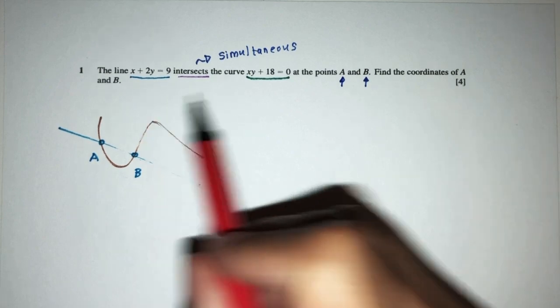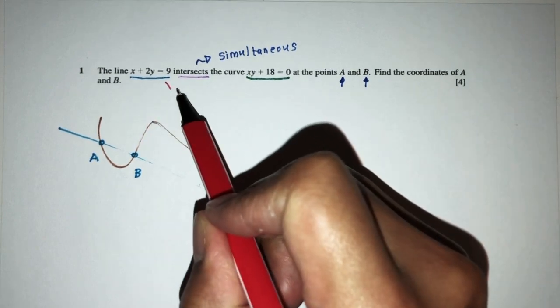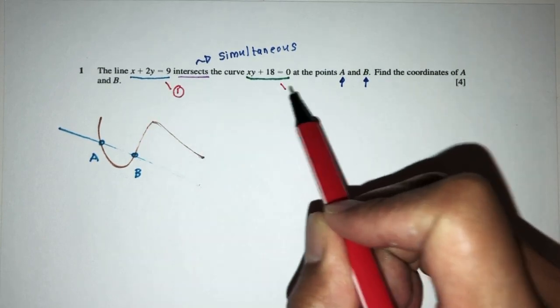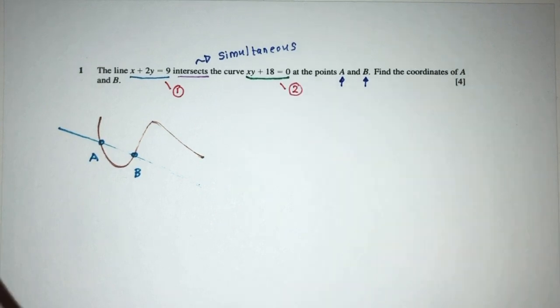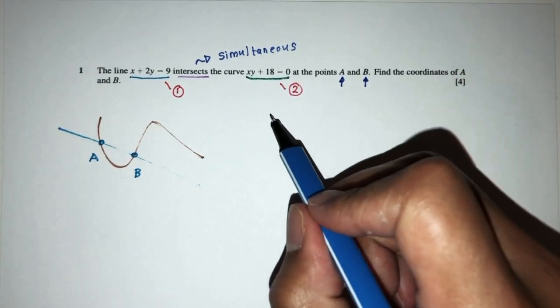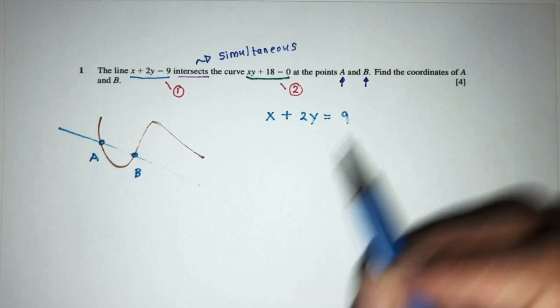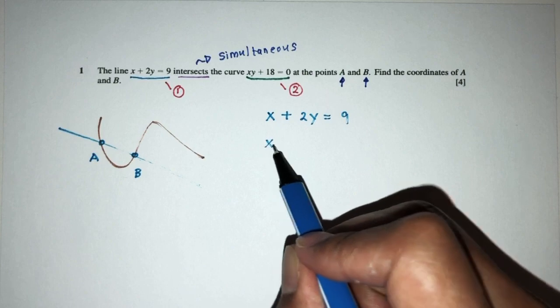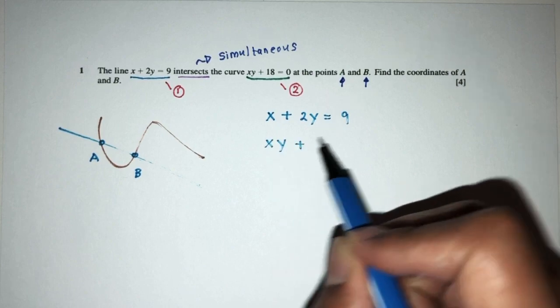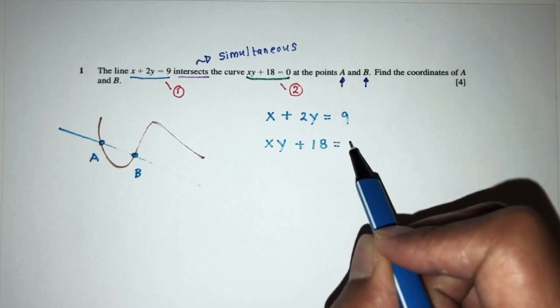So, step by step, here we have two equations. This is my equation number one. My equation number two. So, let me write this down. So, we have first, x plus 2y is equal to 9. Now, here we have xy plus 18 is equal to 0.